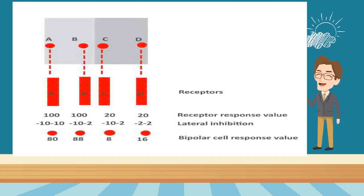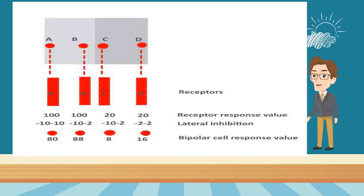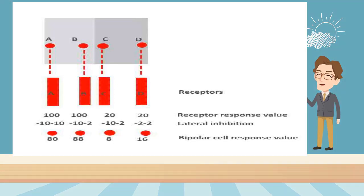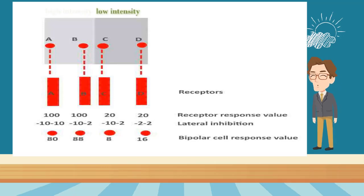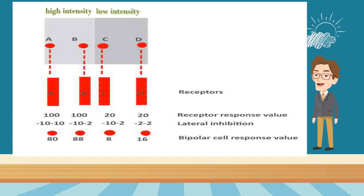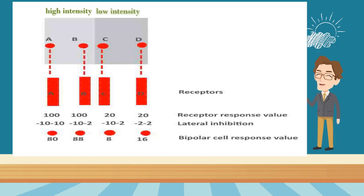Next, let me explain the cause of this illusion in terms of neurological mechanisms. In this picture, the left block is brighter than the right one. The block on the left produces high intensity stimuli, and the block on the right produces low intensity stimuli.